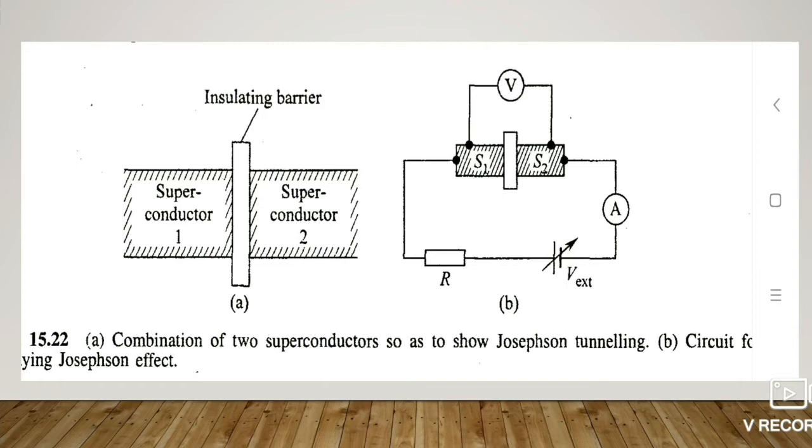As we have seen, there are two superconductors which are separated by an insulating barrier. This is the circuit for showing the Josephson Effect.